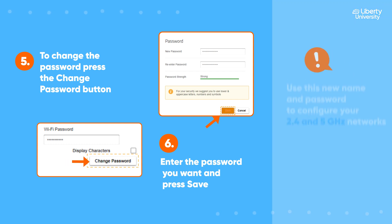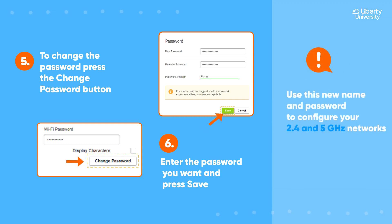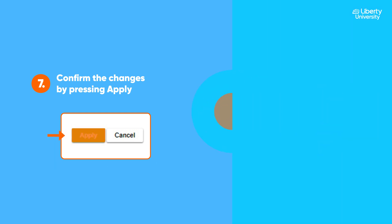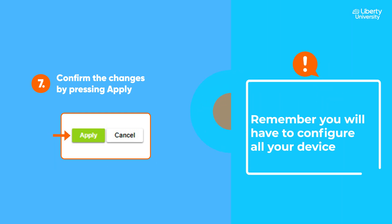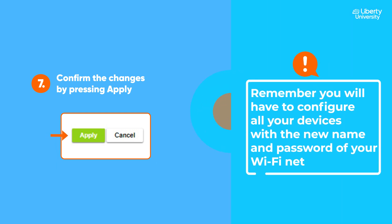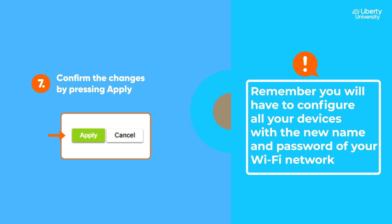Use this new name and password to configure your 2.4 and 5 GHz networks. This way, the installation process will be more effective. Confirm the changes by pressing Apply. Remember, you will have to configure all your devices with the new name and password of your Wi-Fi network.